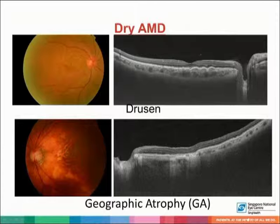This slide shows the features of dry AMD, which includes drusen as well as geographical atrophy. In the upper left picture, it shows presence of intermediate to large soft drusens centered around the macula, as shown in the optical coherence tomography on the upper right corner. On the lower left corner, it shows an area about one and a half disc diameters centered on the fovea of geographical atrophy with retinal pigment epithelial atrophy, as evidenced on optical coherence tomography on the lower right picture.